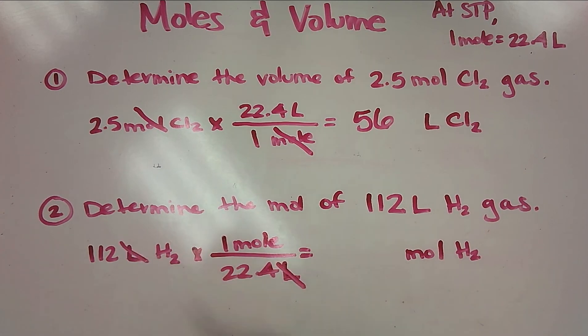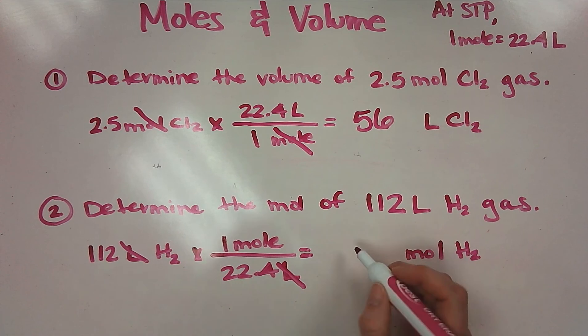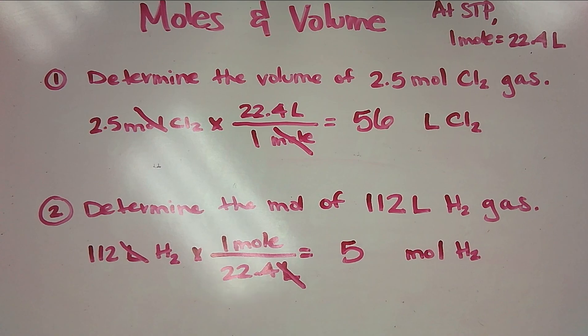I'm going to multiply everything across the top, so 112 times 1 is 112. Then I'm going to divide by everything on the bottom, so 112 divided by 22.4, and I get 5 mole. Try a couple of these on your own, come back to this video as needed, and as always, ask me questions.